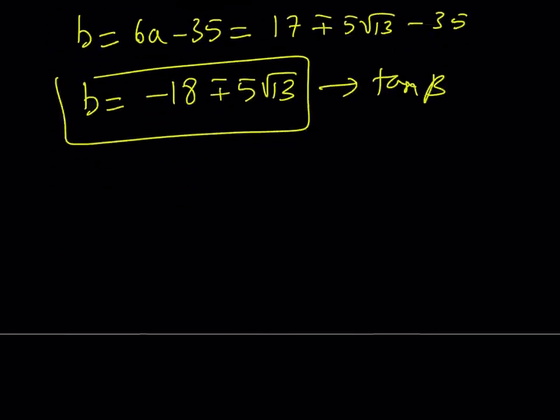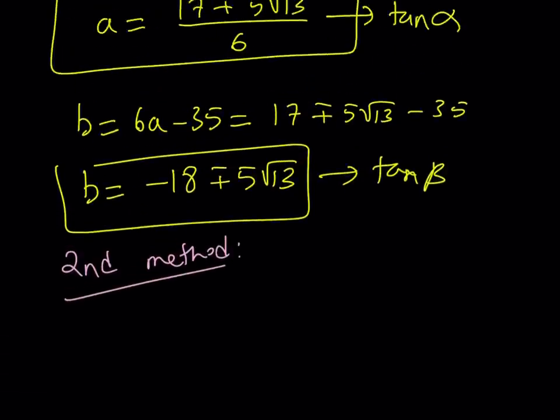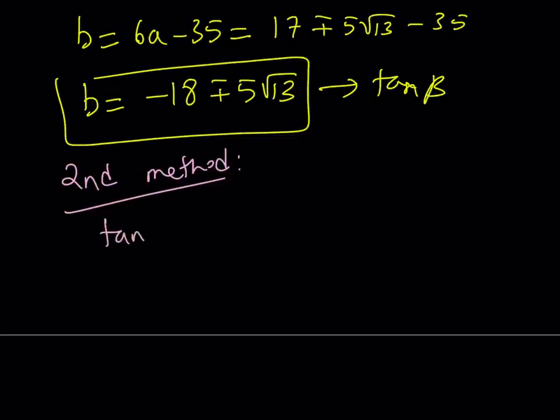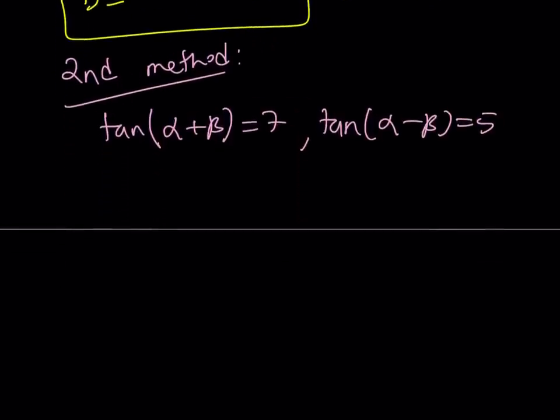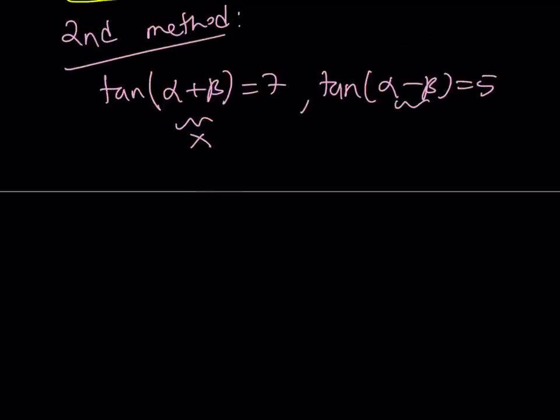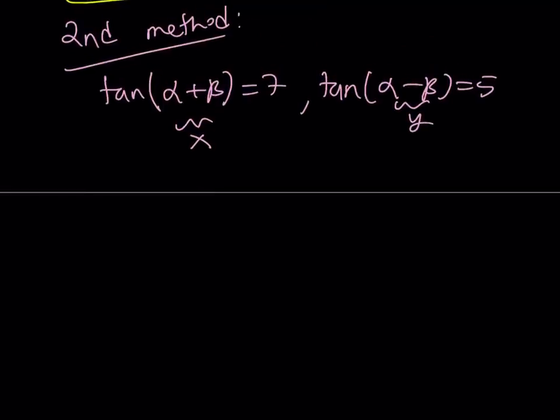Now let's take a look at the second method. What does the second method involve? It's slightly different than what we did here. For the second method, let me rewrite these. The second method takes advantage of the double angle formula. Let me make it clear. So x and y. If I add x and y, or in other words, tangent x is 7, tangent y is 5. What is tangent x plus y? You'll see in a little bit.